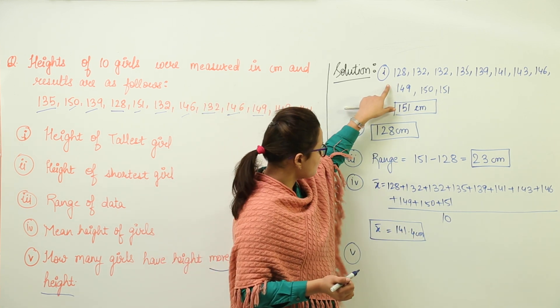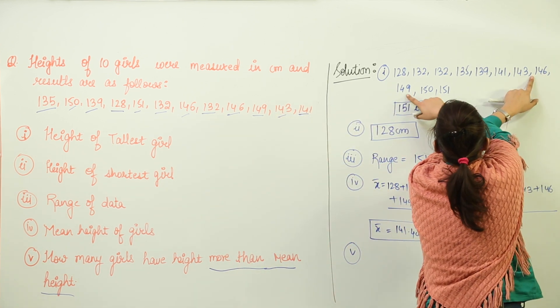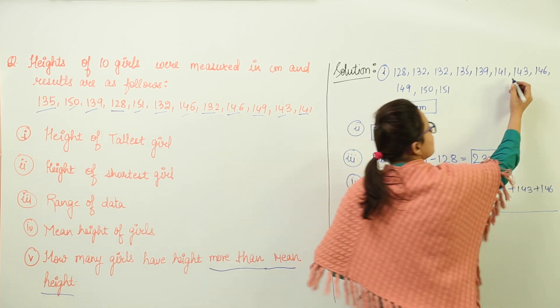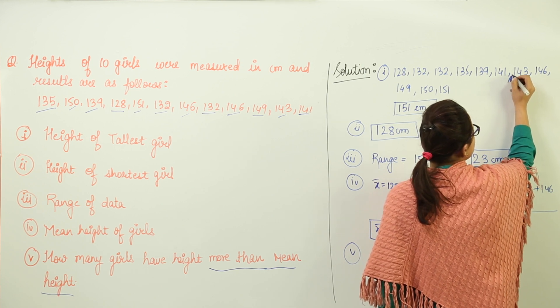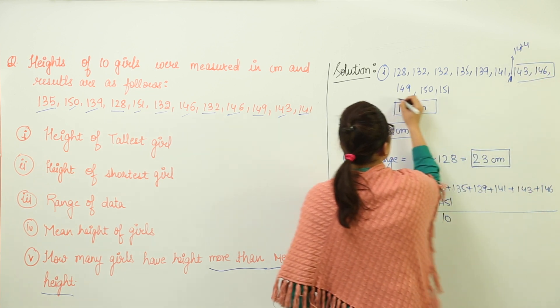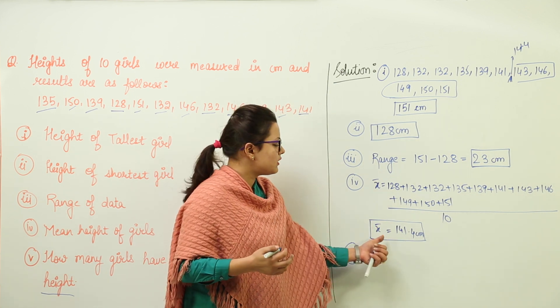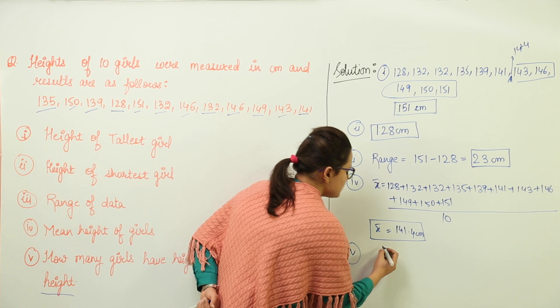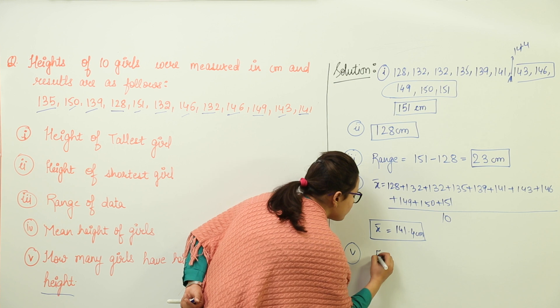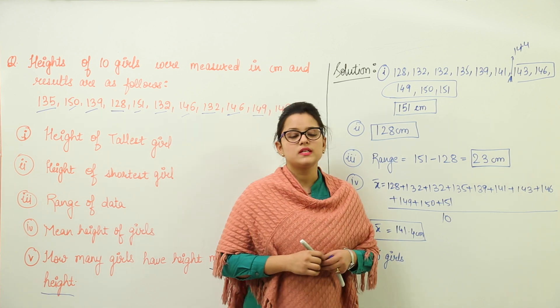So how many values are greater than 141.4? They are 1, 2, 3, 4, and 5. That means 141.4 is going to lie somewhere here - that means I have all these values as the values which are greater than 141.4 centimeters. So there are 5 girls who are having the height of more than 141.4 centimeters.